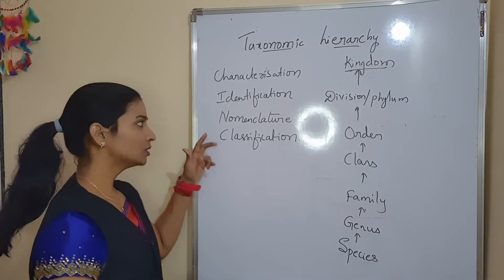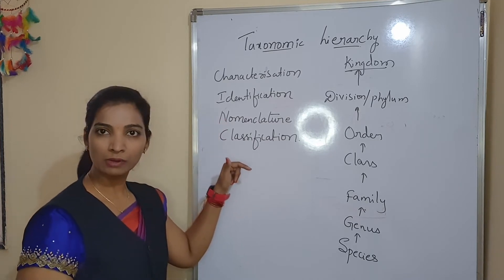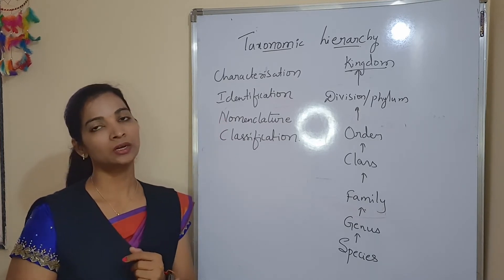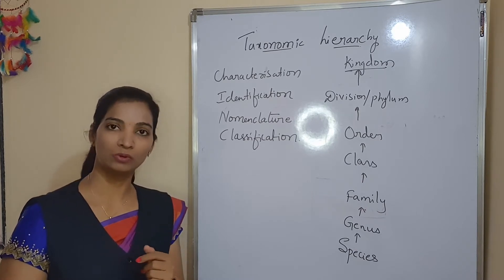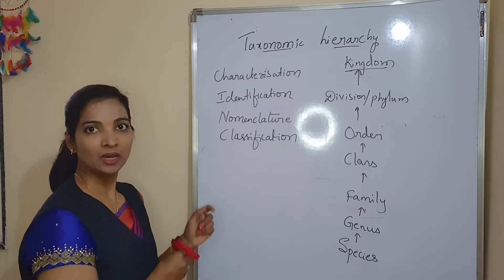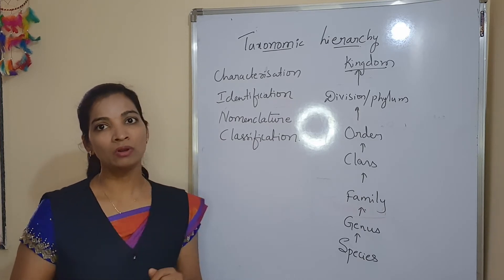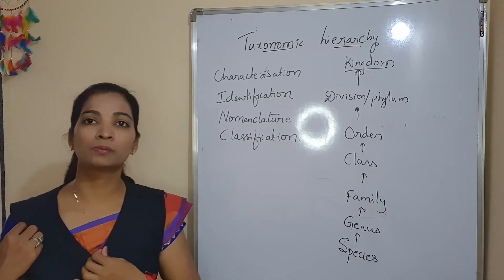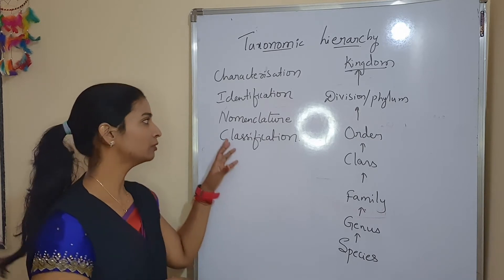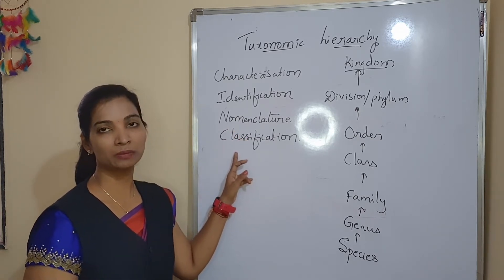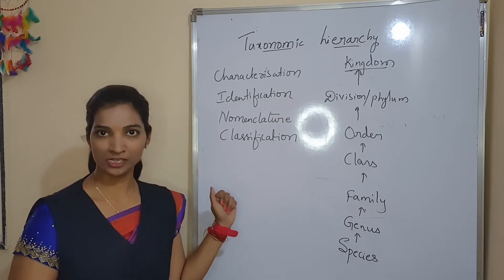Some of you will be saying that first classification, then nomenclature. Yes, when you are naming an organism and you know the characters, you go in that order. But when you have known organisms and you need to give the new organism a name, you first name it and then place it under a separate taxa — that is classification.